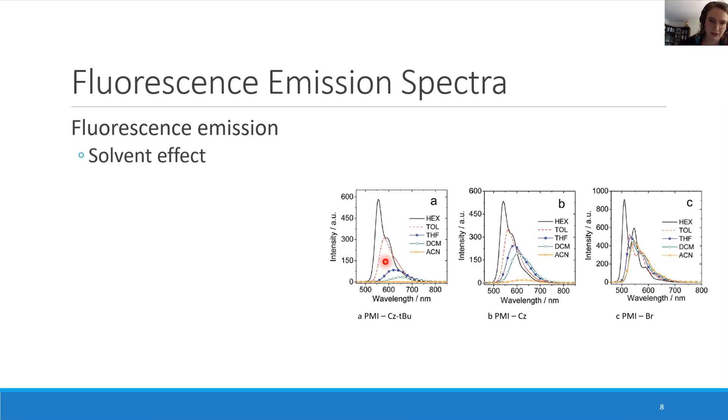You can see that the intensity decreases strongly, especially for the tert-butyl group dyad. But also there's a red shift, the band is broadened. So these are all indications for a solvent effect.